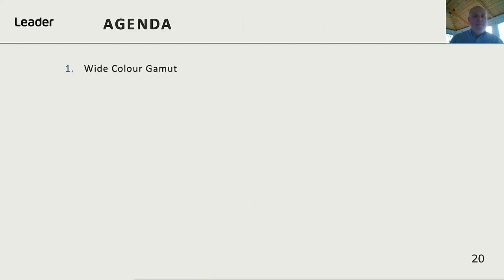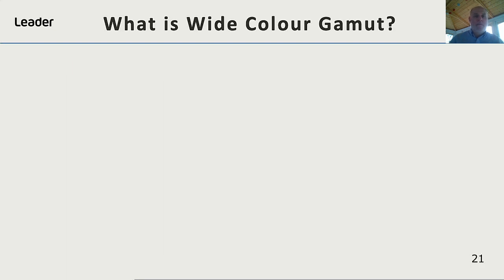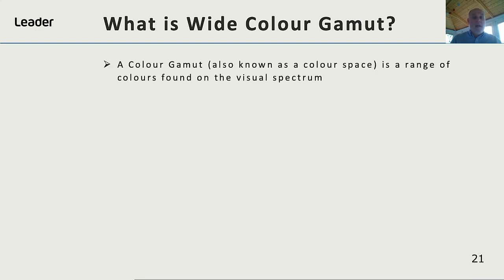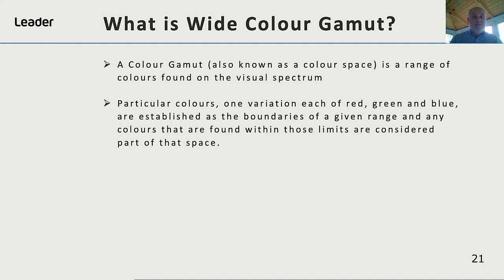Today we're going to talk about wide colour gamut. But what is wide colour gamut? A colour gamut, also known as a colour space, is a range of colours found on the visual spectrum. Particular colours — one variation each of red, green, and blue — are established as the boundaries of a given range. Any colours found within those limits are considered part of that space.